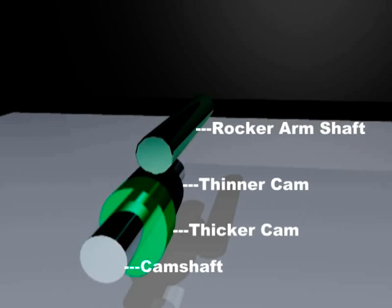The objective of the following animation is to give a schematic representation of the mechanism to be used for obtaining variable valve timing in the inlet valves of the engine. Here we can see the camshaft with the two cam lobes having different cam profiles to be used for the same valve and the rocker arm shaft above it.